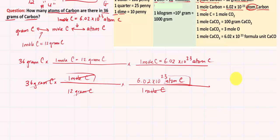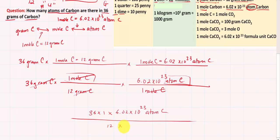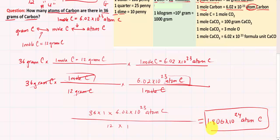Now let's simplify and plug into the calculator. Multiply all the numbers on top divided by all the numbers on the bottom: 36 times 1 times 6.02 times 10 to the 23rd, divided by 12 times 1, gives us 1.806 times 10 to the 24th atoms of carbon. So the value of 1.806 times 10 to the 24th atoms of carbon is the same value as 36 grams of carbon. In chemistry terms, if you have 36 grams of carbon, you have exactly 1.806 times 10 to the 24th atoms of carbon — and that is a lot of atoms, which makes sense because atoms are very small.